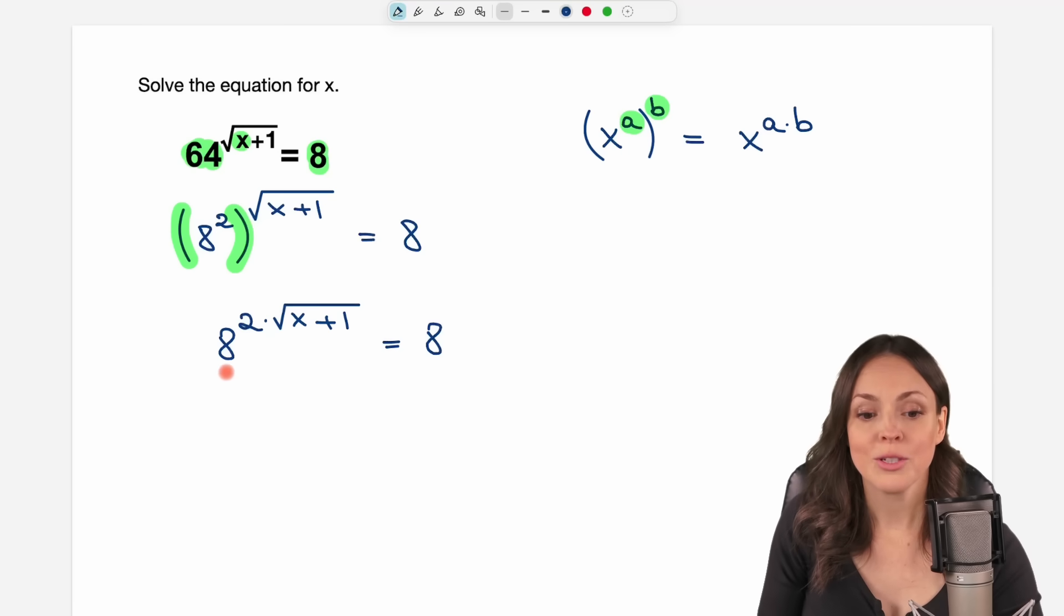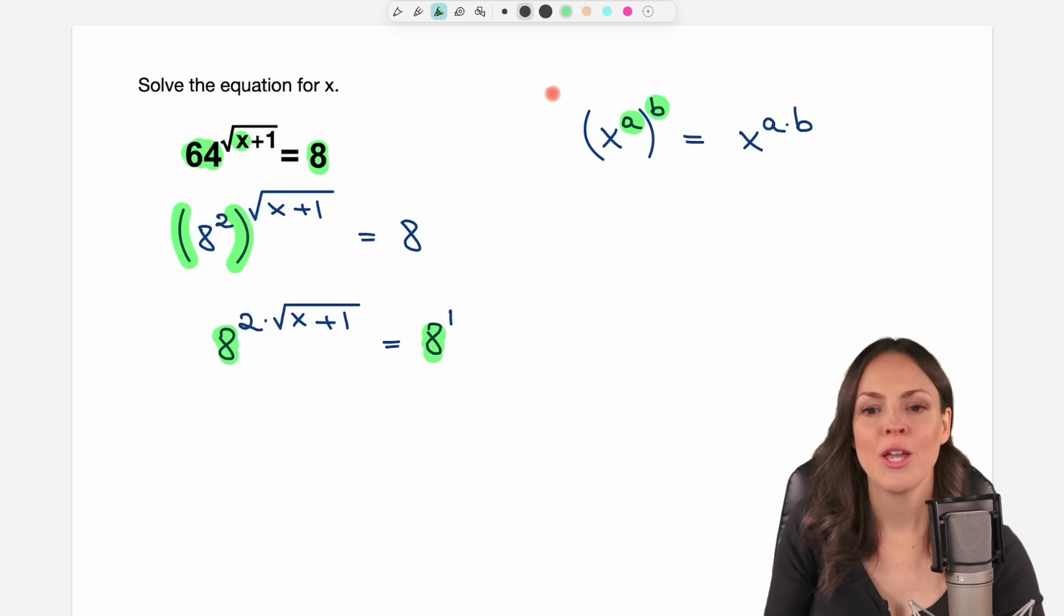If we compare the two sides now, we have 8 to the power of something here, and here we have 8 to the power of something as well. If we don't see anything, then there's always a 1. On the left side we have this as our exponent, on the right side we have this as our exponent.